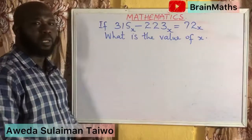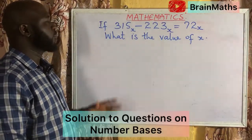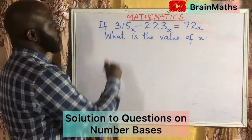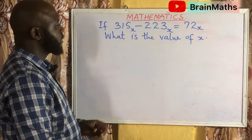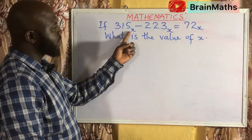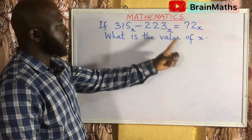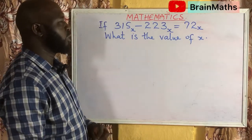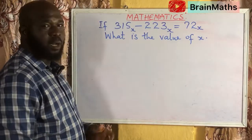Welcome to another edition of Brain Maths. On today's edition, we want to look at how to solve a problem given in base. We have 315 in base X and another number also in base X equal to another number that is also in base X. So we want to find the value of this X.